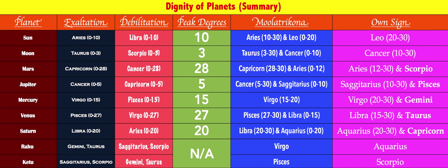Ketu, the reverse of Rahu, gets exalted in Sagittarius and Scorpio because it is the planet of spirituality and the outer world. It gets debilitated in Gemini and Taurus — the signs of materialistic prosperity and family life — where Rahu finds exaltation. Ketu's duty is to make you detached. Its moolatrikona is considered to be Pisces, the 12th house of moksha and letting go, and it rules Scorpio as its own sign.